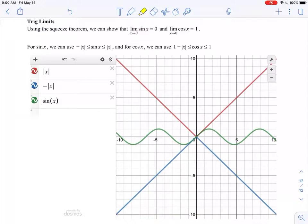We don't want to overwhelm ourselves with trigonometry here. So we can actually use the squeeze theorem to show that the limit as x approaches 0 of sine of x is equal to 0 and the limit as x approaches 0 of cosine of x is equal to 1.